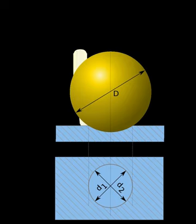HBW is calculated in both standards using the SI units with the formula for load divided by surface area of indentation.